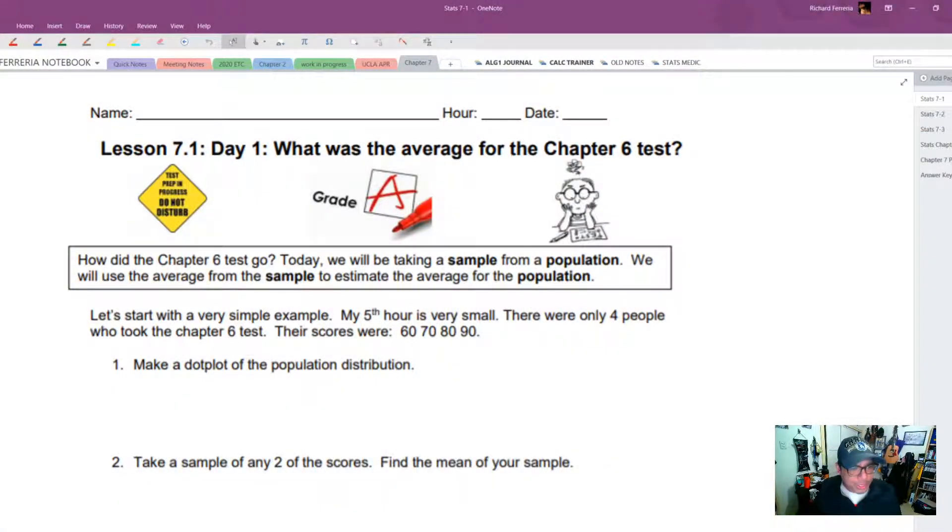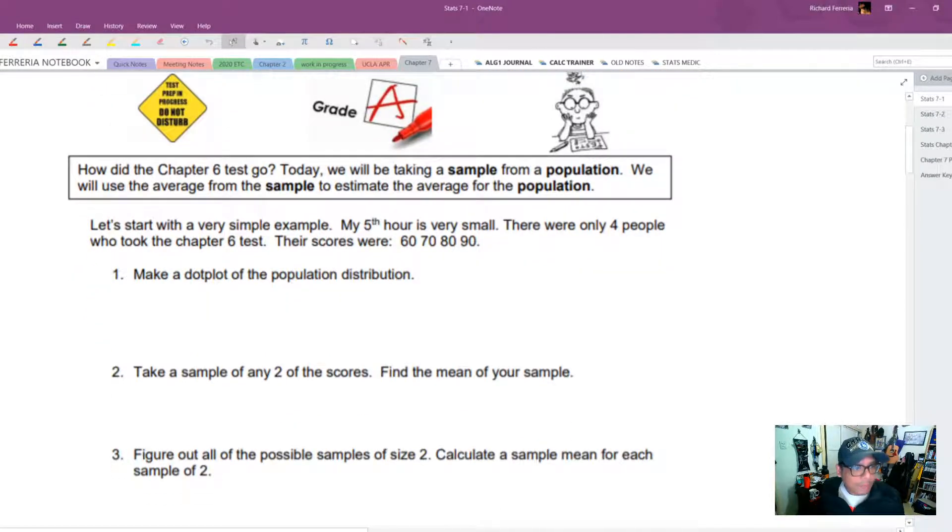So how did Chapter 6 go? Today we're going to be taking a sample from a population, and we're going to start with a very small population. We're going to sample to try to estimate the average of the population. Let's start with a very simple example. It says my fifth hour is very small.